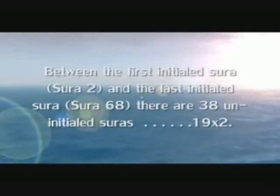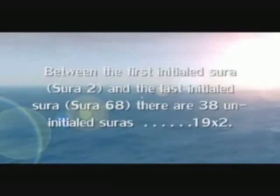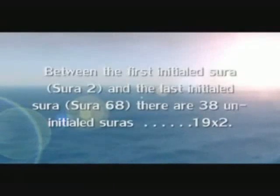Between the first initial chapter, Chapter 2, and the last initial chapter, Chapter 68, there are 38 uninitial chapters, or 19 times 2. Furthermore, between the first and the last initial chapter, there are 19 sets of alternating initial and uninitial chapters.